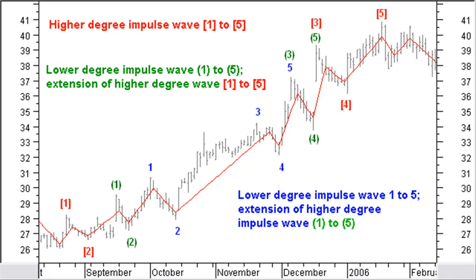A typical up impulse wave, big brackets 1 to big brackets 5, with an extension of a lower degree, brackets 1 to brackets 5, in the big brackets 3 wave. But also this wave has another extension of a lower degree with waves 1 to 5. From the start of the main impulse wave, big brackets 3 up, you can take a long trade around $29 and stay in the trade based on the Elliott Wave count until wave big brackets 5 is confirmed above wave big brackets 3, at around $39.50. A nice profit, thanks to the fact that you could stay in the trade based on the Elliott Wave count.